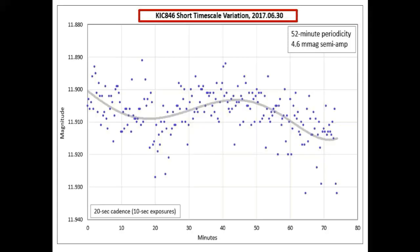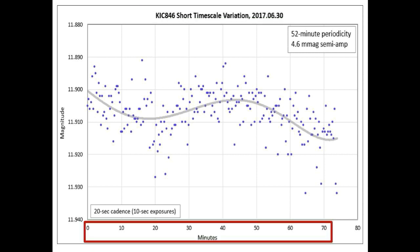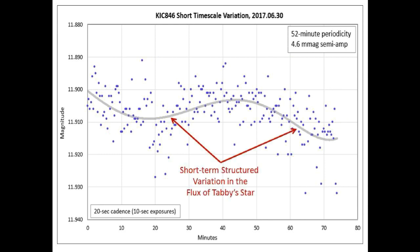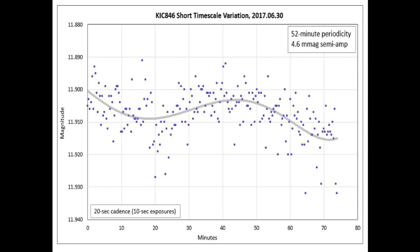On June 30th of this year, Bruce Gary took flux measurements of Tabby's Star over a 72-minute period. During this period he took multiple 10-second exposures, indicated by the blue dots. He noticed that the flux measurements over the 72-minute period showed a sinusoidal type of variance, indicated by the best-fit curve in gray.